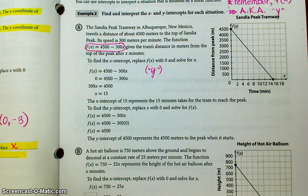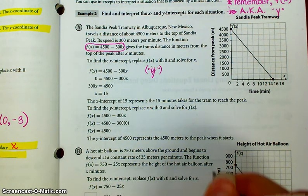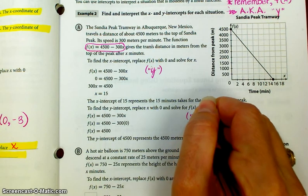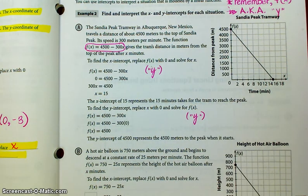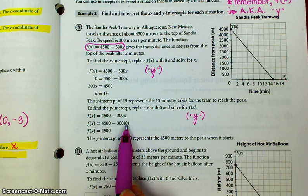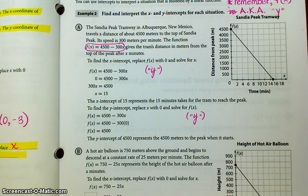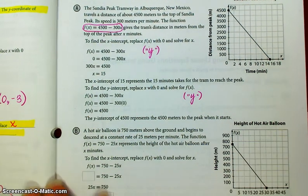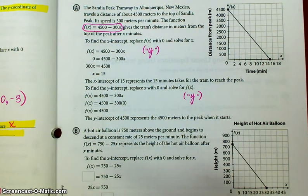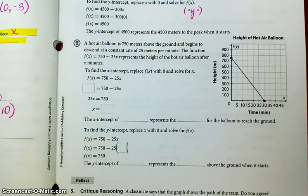So the x-intercept of 15 represents the 15 minutes it takes for the tram to reach the peak. So to find the y-intercept, replace x with 0 and solve for f(x), which, remember, is really just like solving for y. Put a 0 in for x. The y-intercept of 4,500 represents the 4,500 meters to the peak when it starts. So you can take an actual situation and, again, solve for the x-intercept and the y-intercept. And then it gives you two points to plot on a graph.